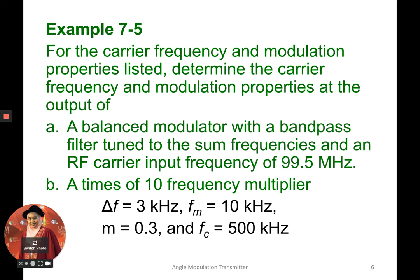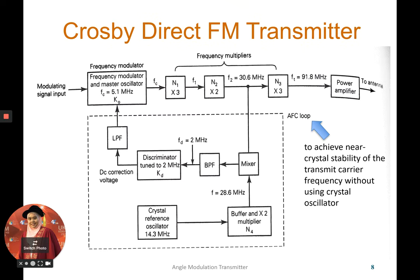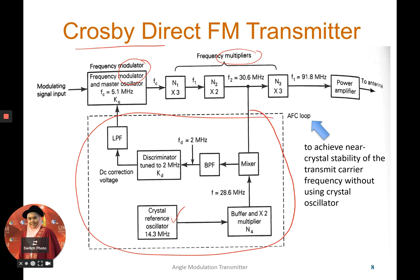Next is the direct FM transmitter. For an FM transmitter, the output waveform's frequency deviation is proportional to the modulating signal. The common FM transmitter widely used is the commercial broadcast band transmitter. The block diagram shown is what we call the Crosby direct FM transmitter, which uses frequency multipliers and a feedback loop to the modulator, receiving the RF frequency from a crystal oscillator.